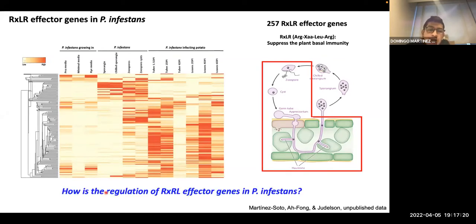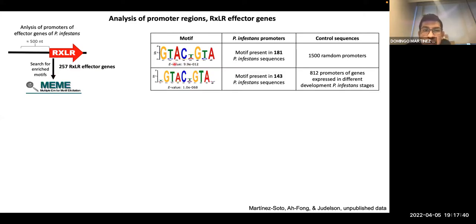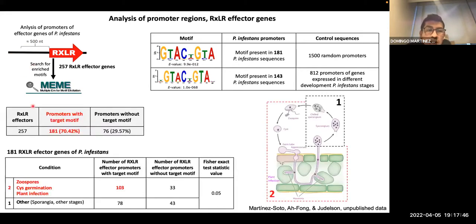The question is: how is the regulation of RXLR effector genes in Phytophthora infestans? To answer this, we analyzed the promoter region of the RXLR effector genes and identified a motif present in these promoter regions. Interestingly, most of the RXLR effector genes have this motif, and also genes with high expression at a stage before plant penetration, during penetration, or during plant colonization — most of those RXLR effector genes have this motif.